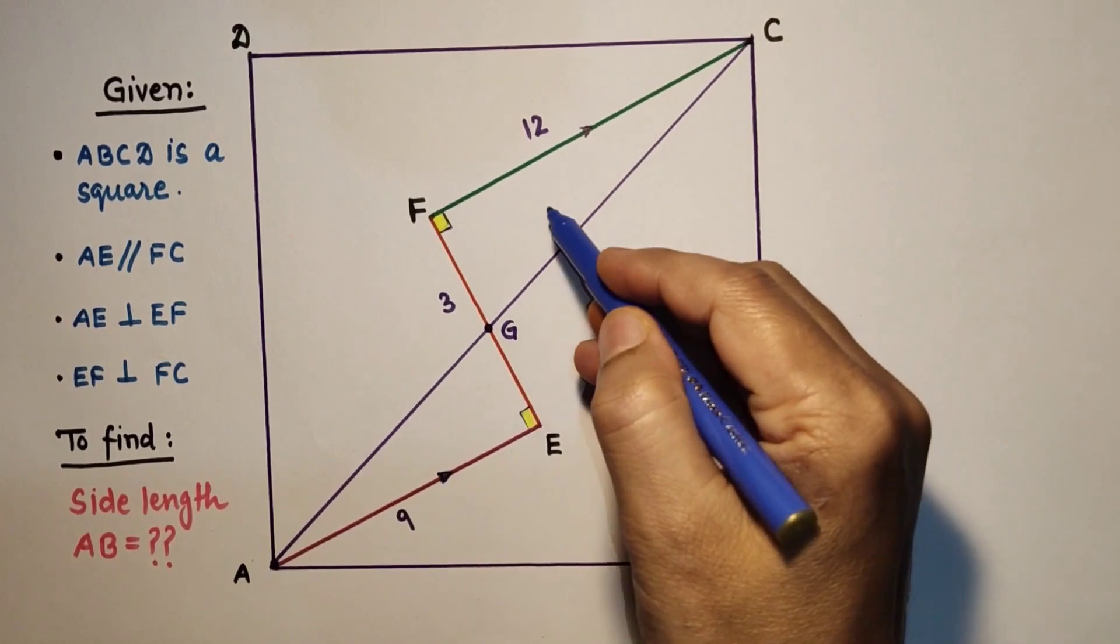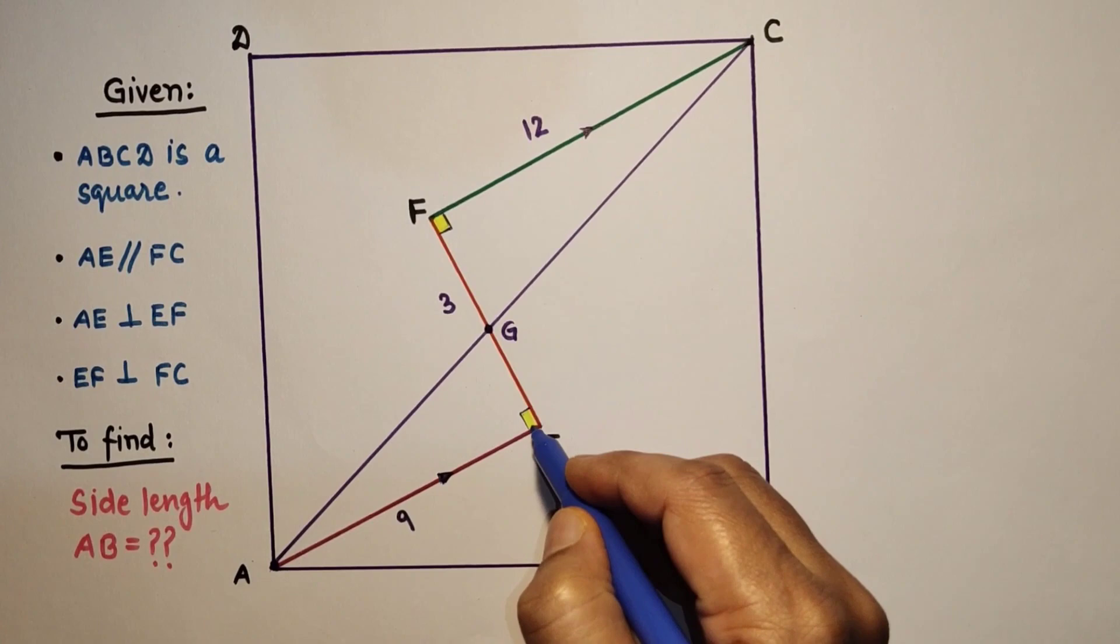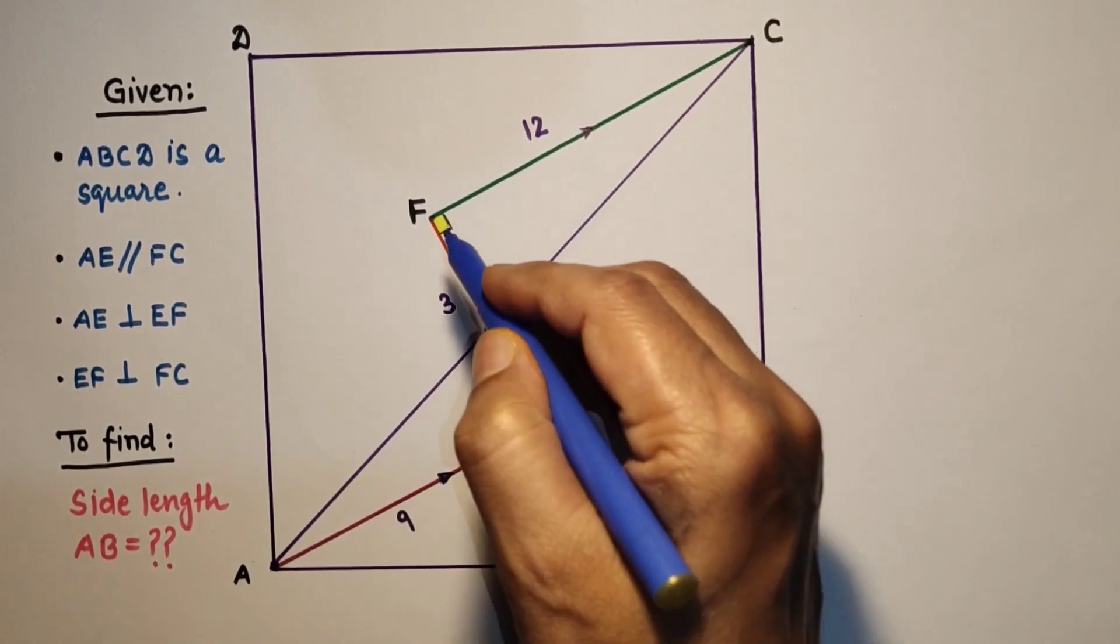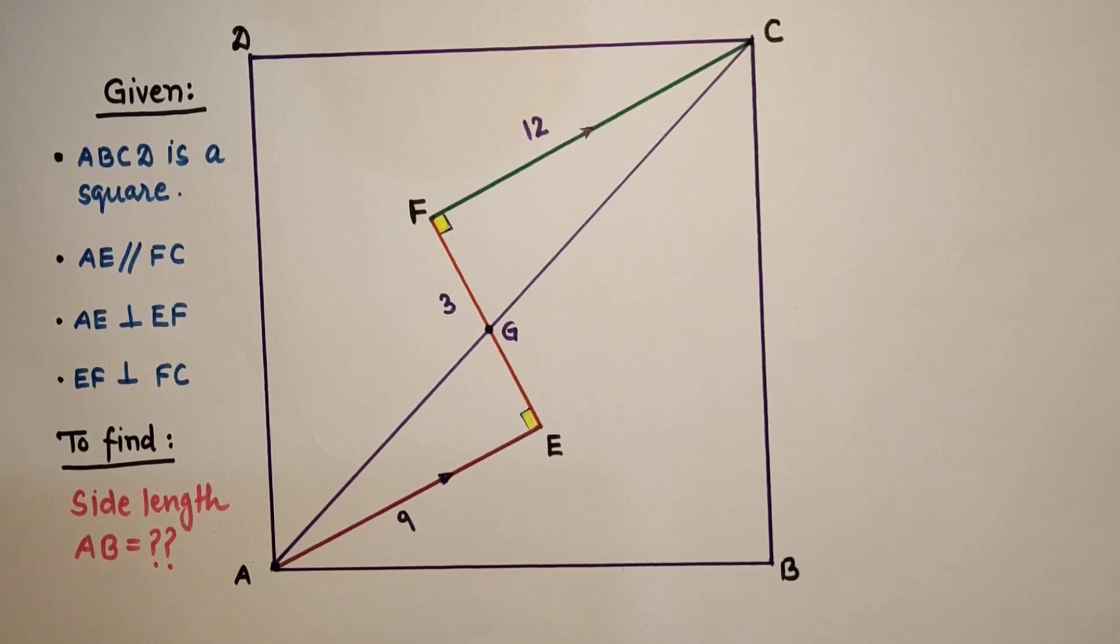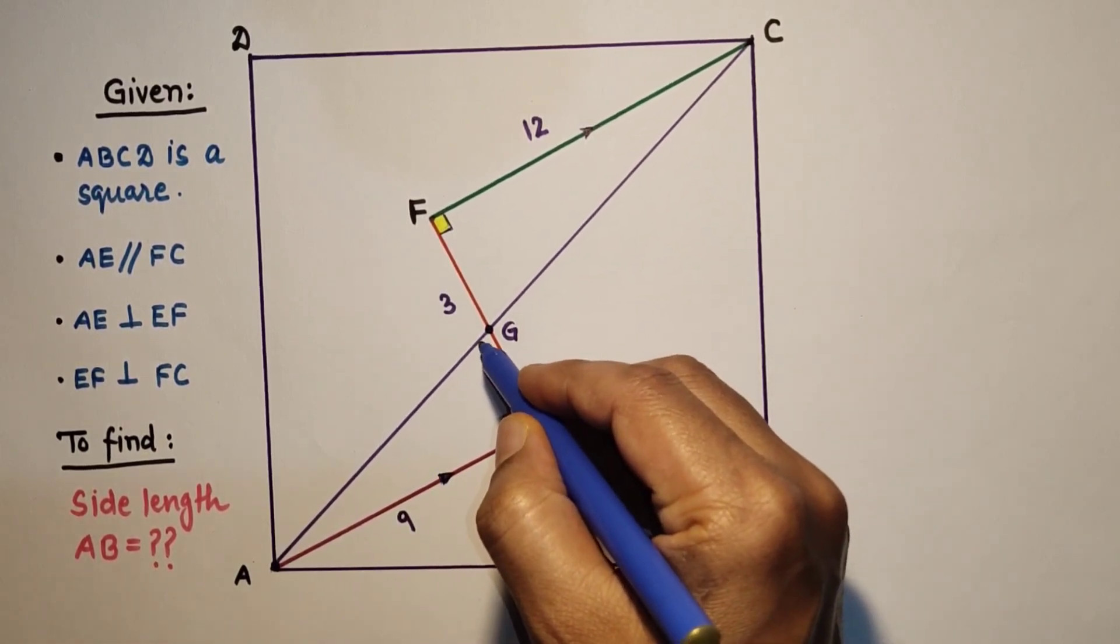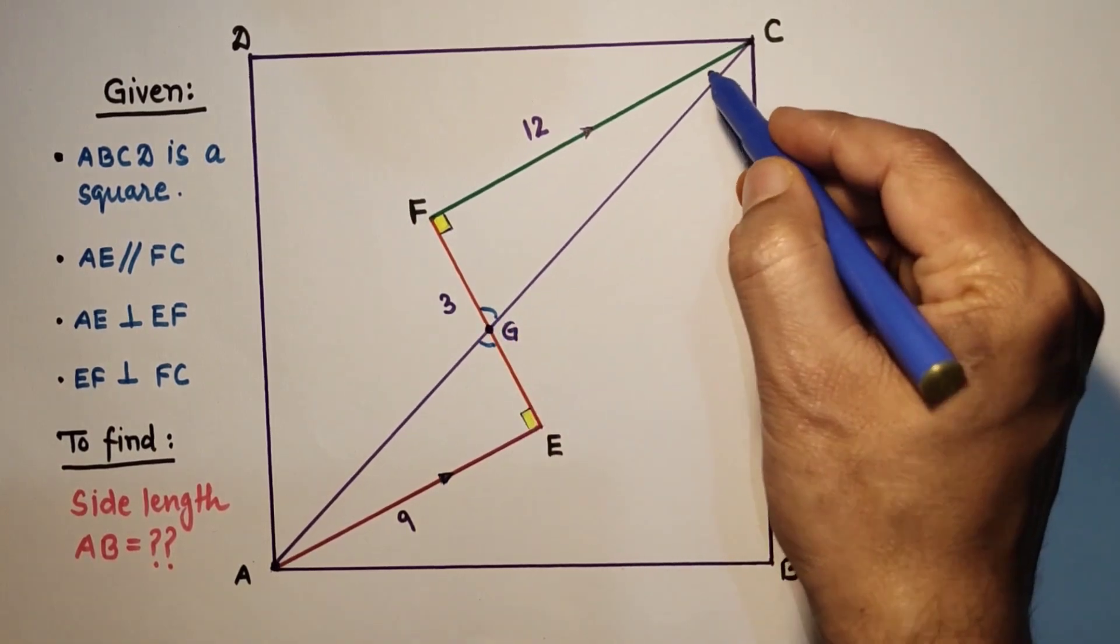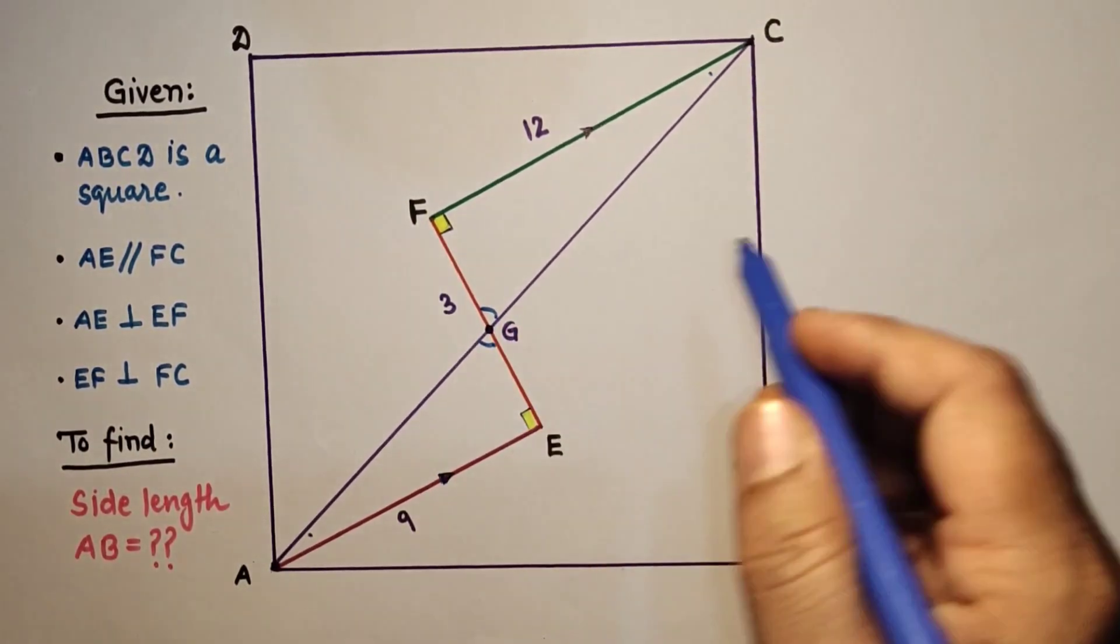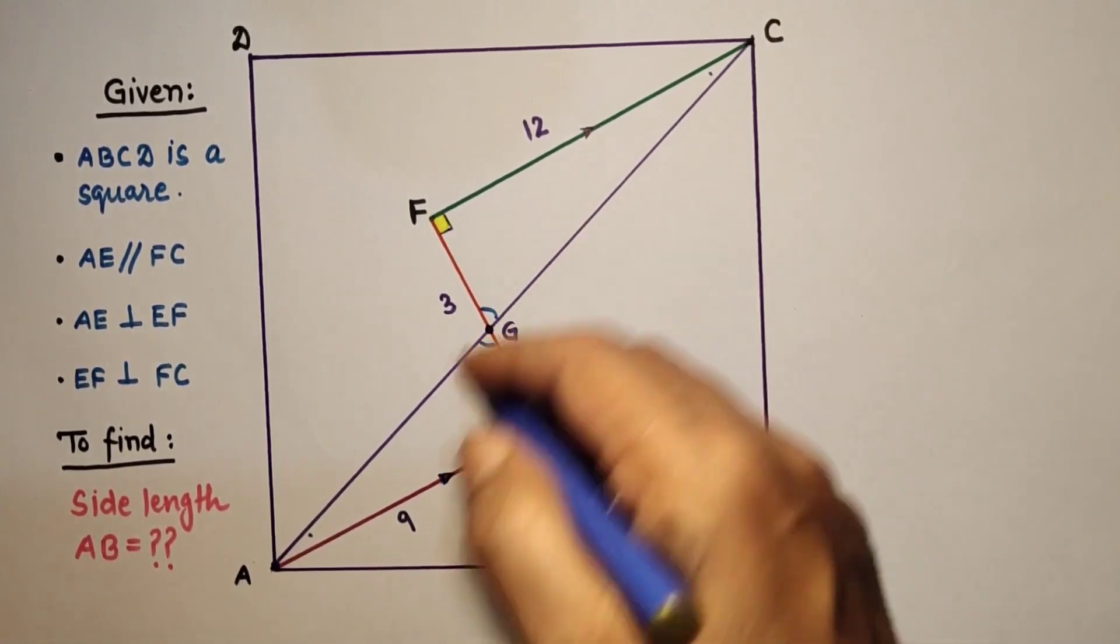In these two triangles AEG and CFG, this angle E and this angle F are 90-90 as given in the question, and these two vertically opposite angles are equal, and these two we can say that alternate angles are equal. So by AA test of similarity, these two triangles are similar.